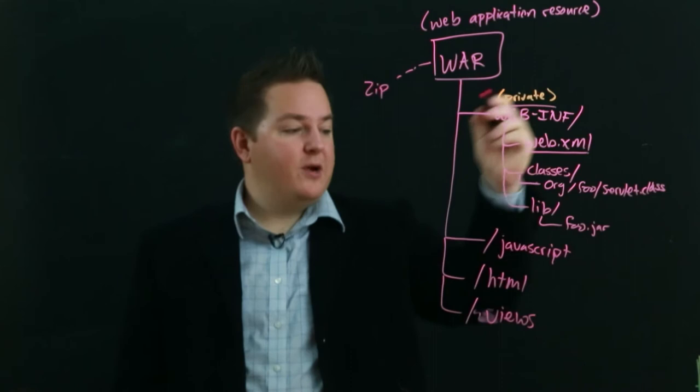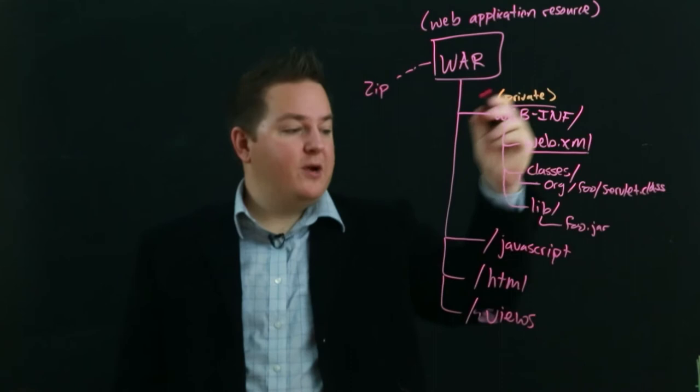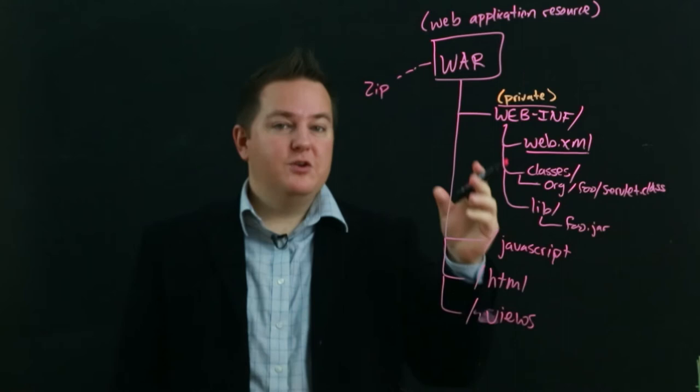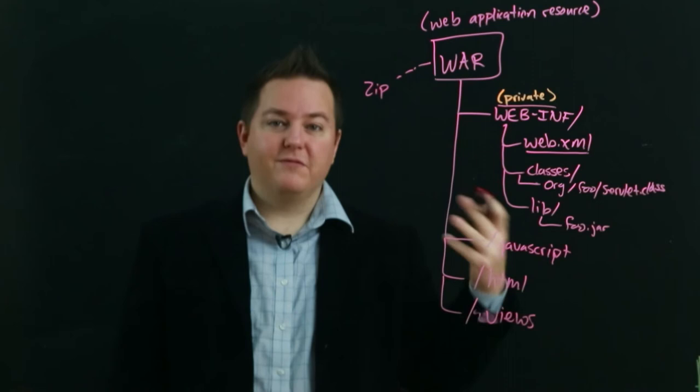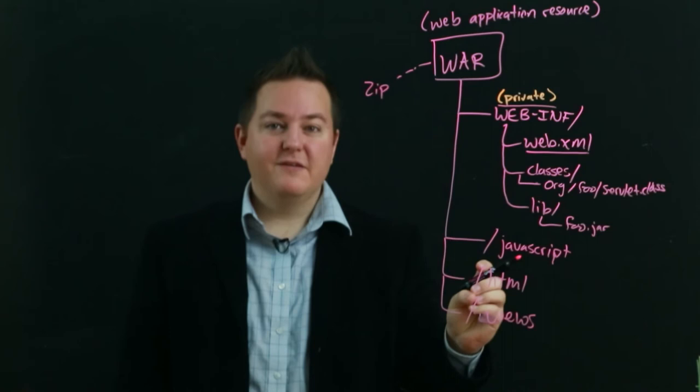So the way that you create one of these WAR files is you create a directory structure that matches what you want your WAR file to look like. That is, you create a folder that inside of it has a web-inf folder, has the web.xml, classes, lib, the other important folders that you need within it to specify the configuration and the code for your application. It has the various resources that are at the root of the WAR or in folders from the root.